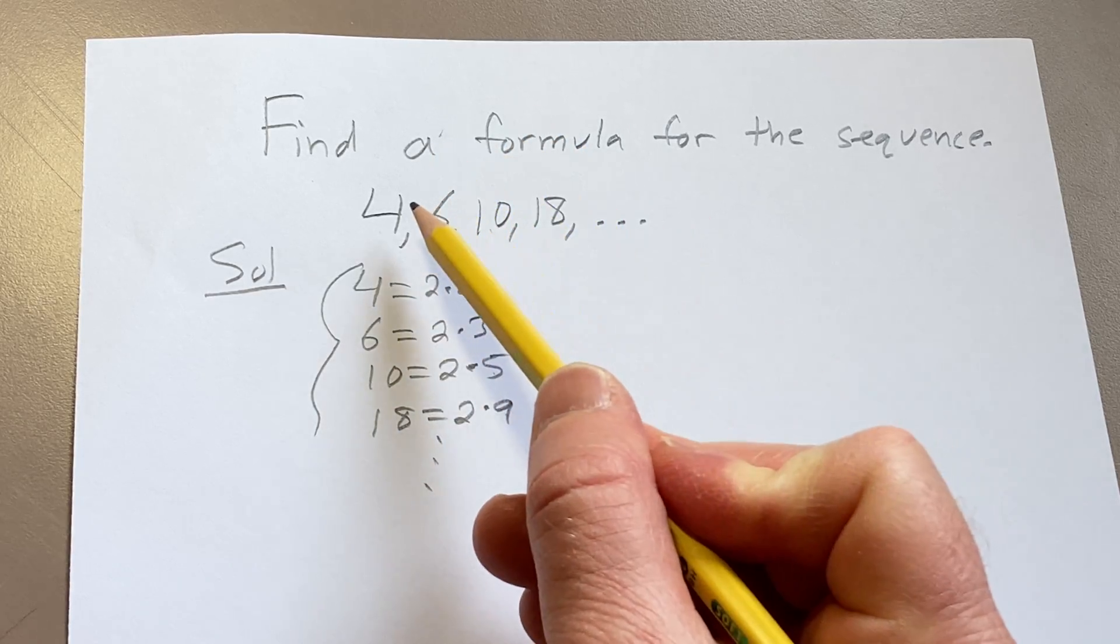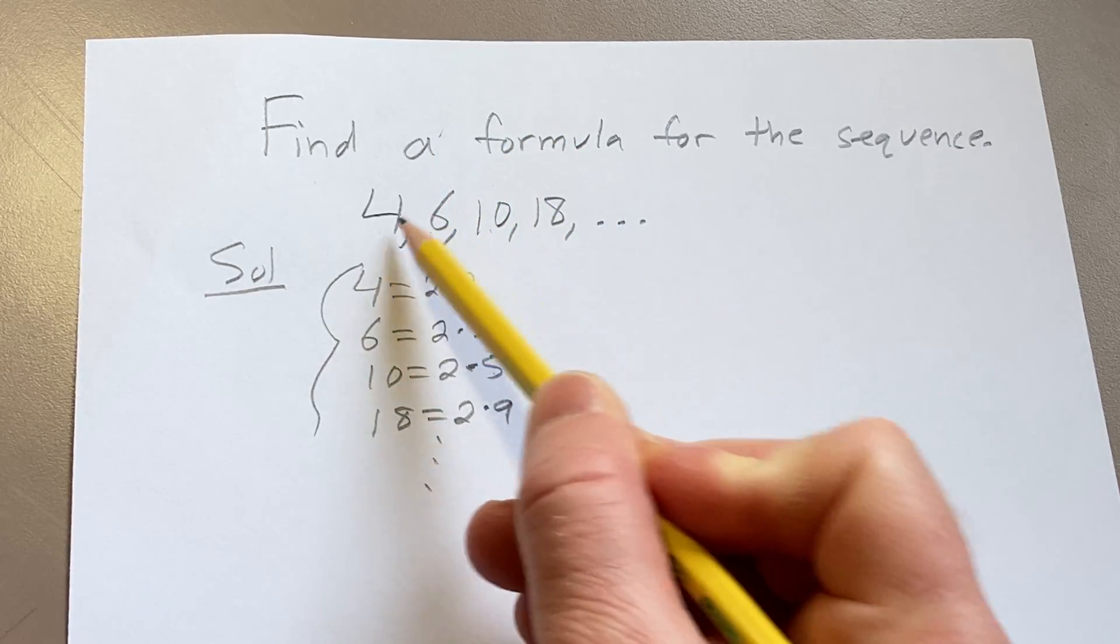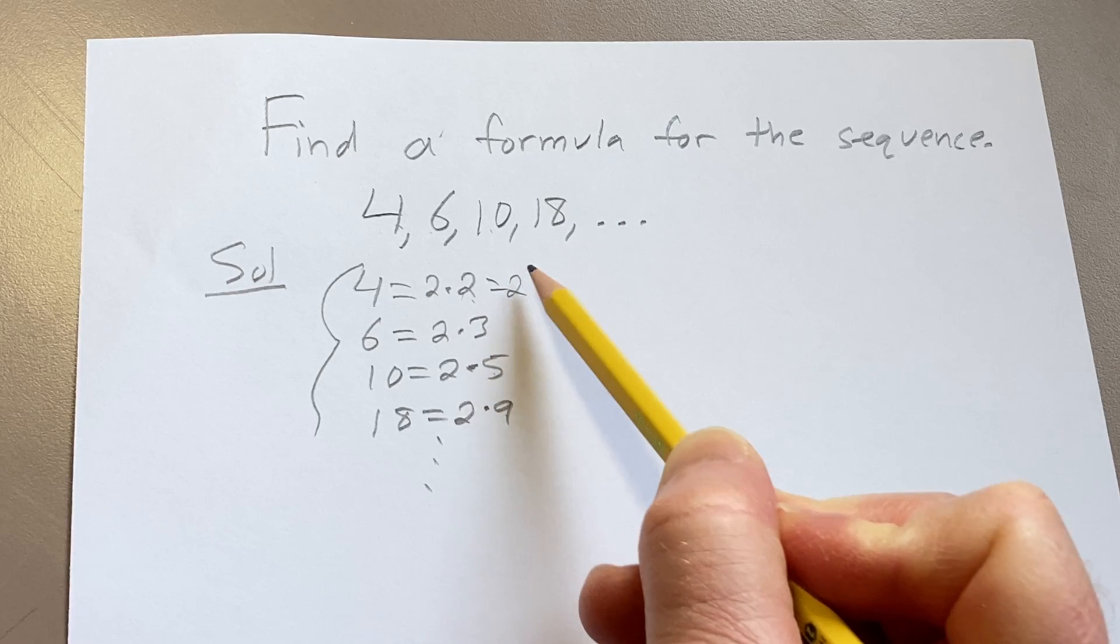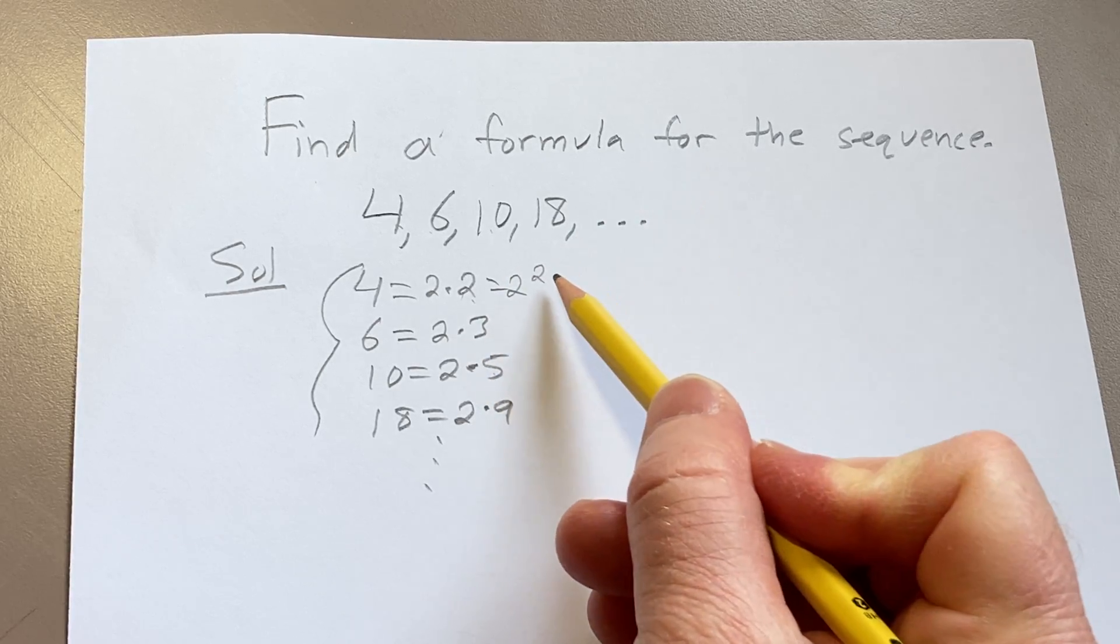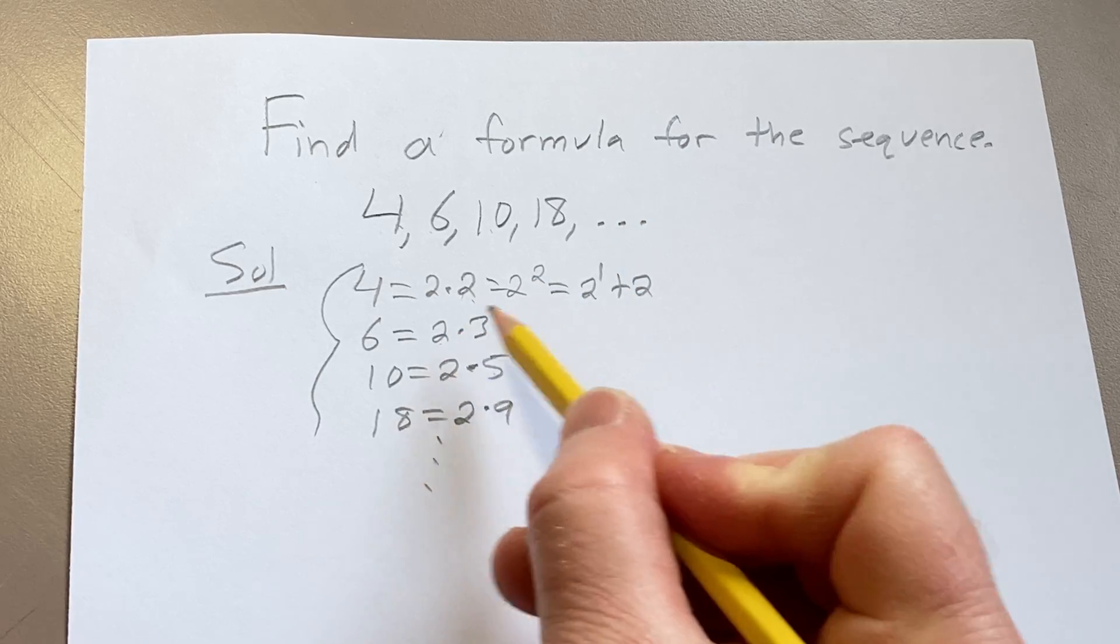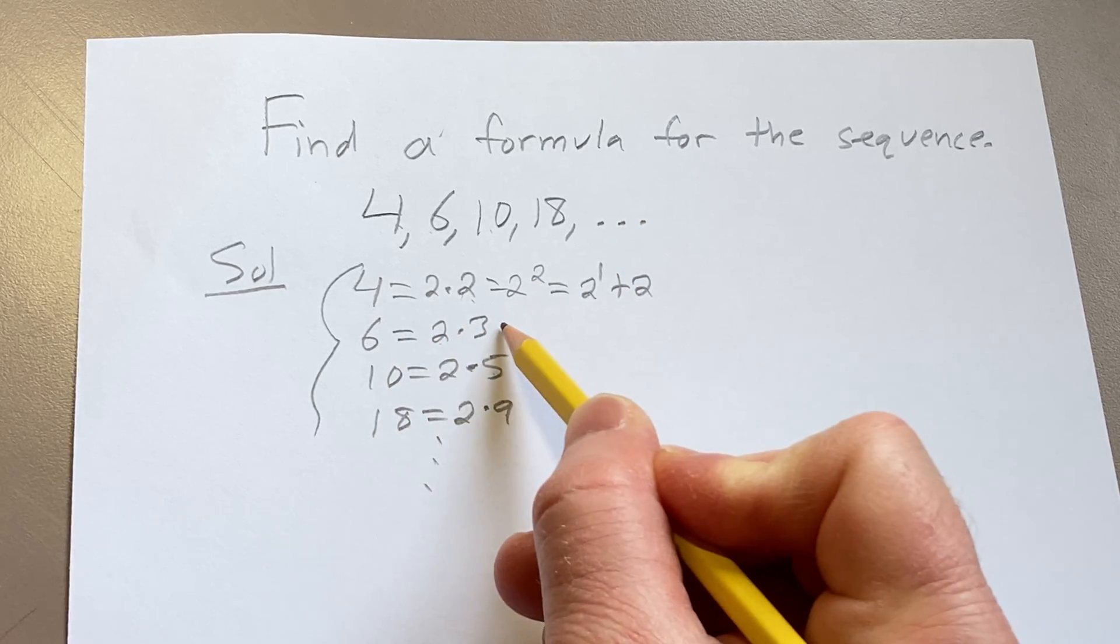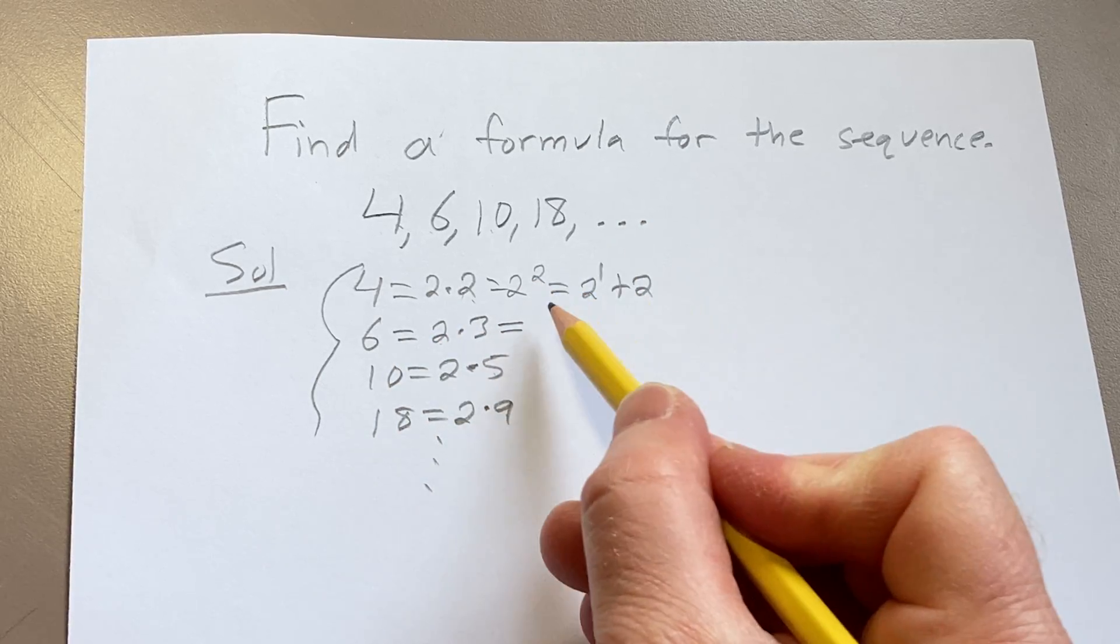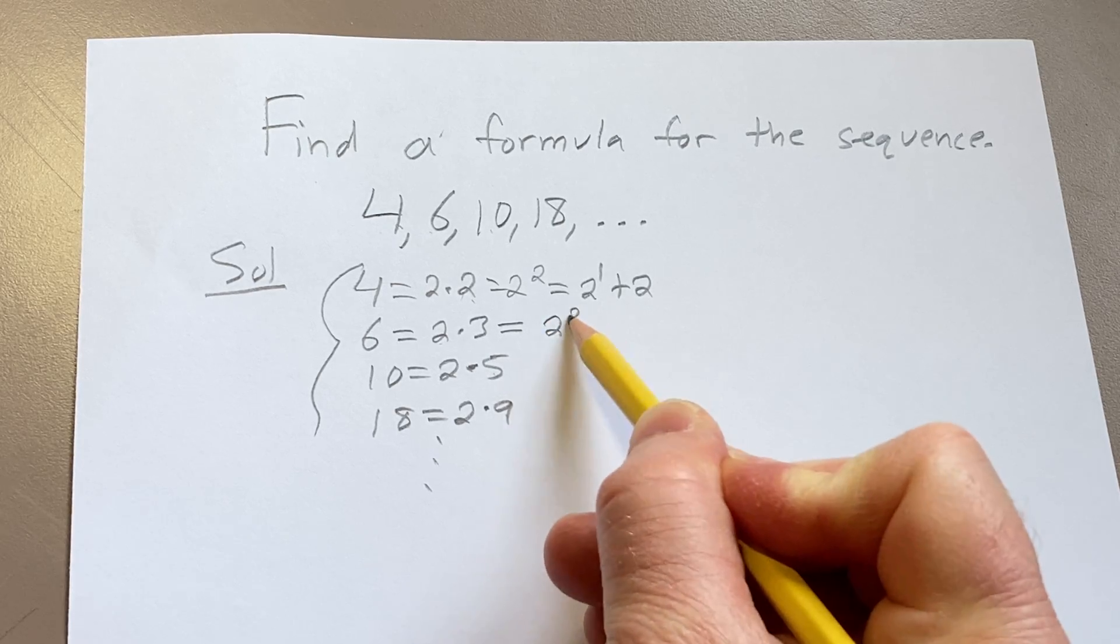So note that 4 is 2 squared, which is really 2 plus 2, or 2 to the 1 plus 2. And 6 is 2 times 3, but you can think of it as 2 squared plus 2.